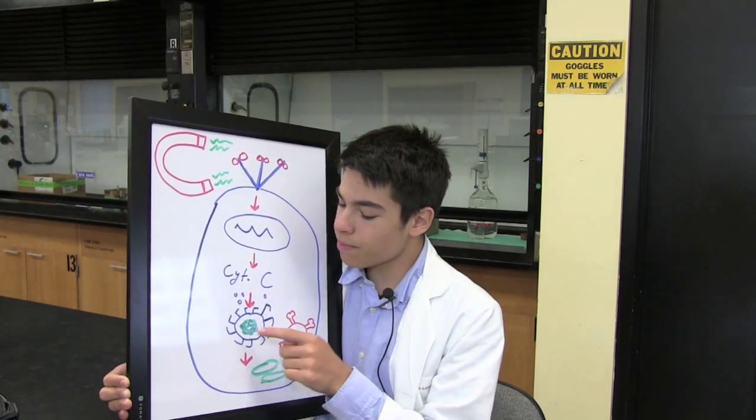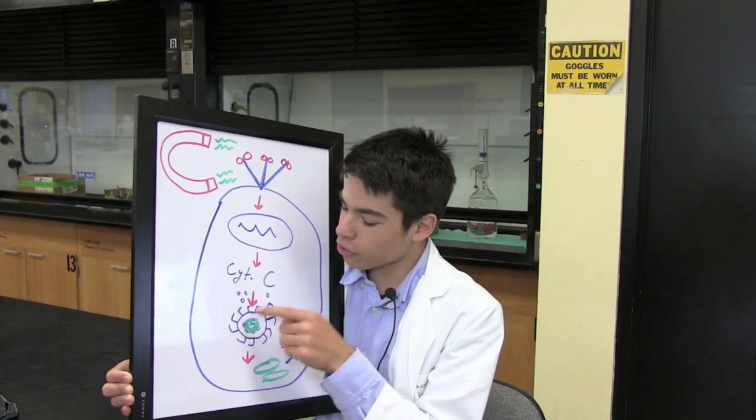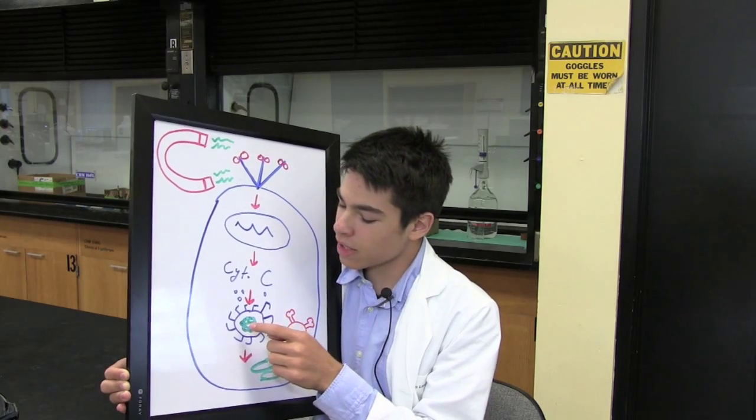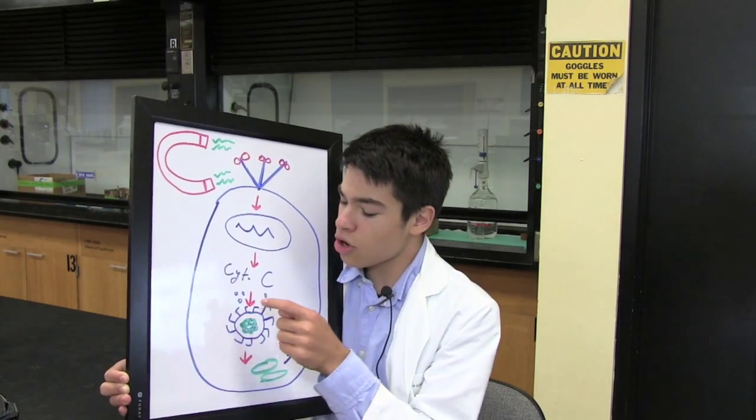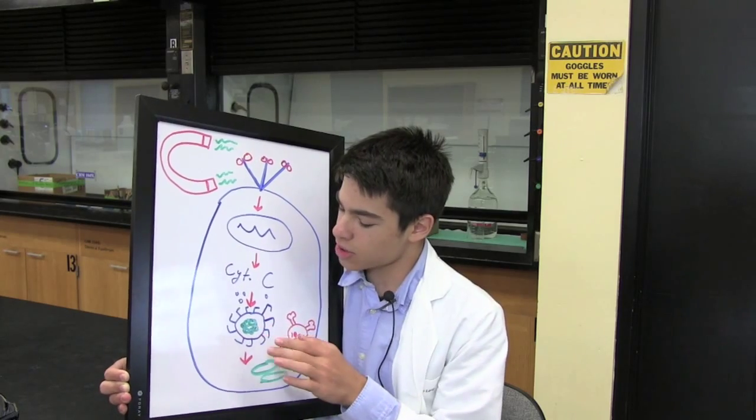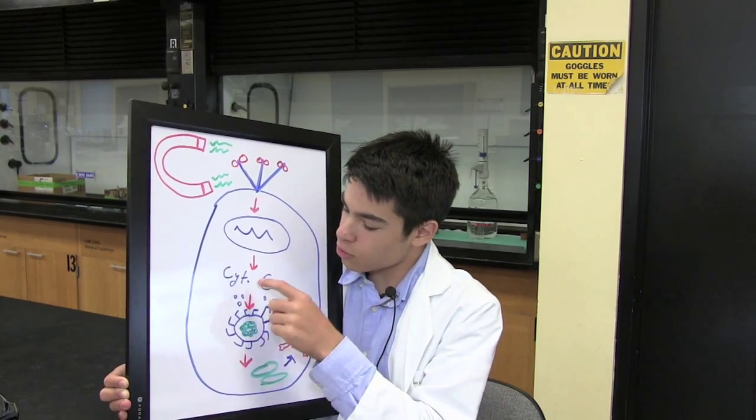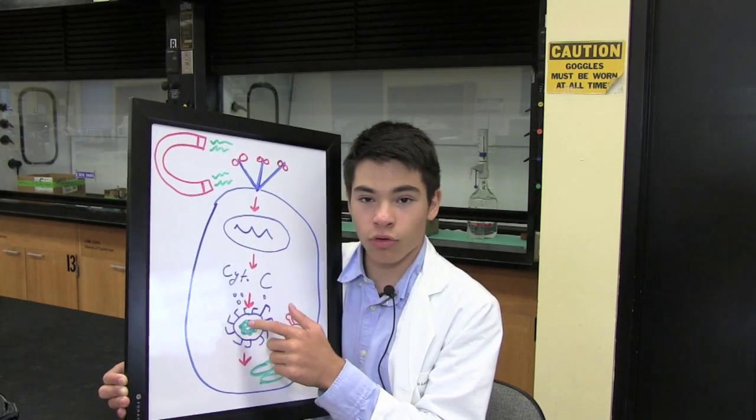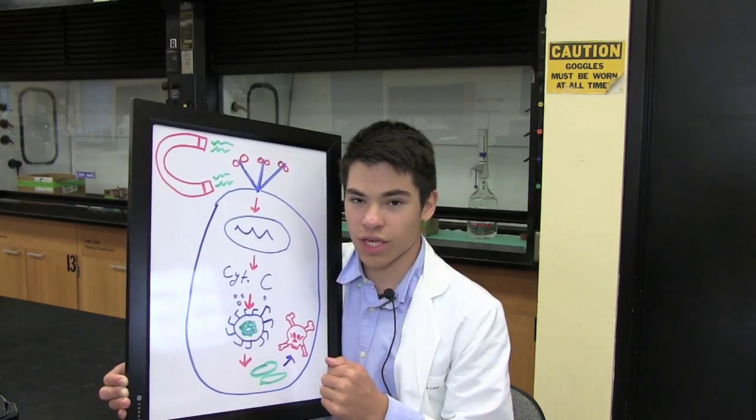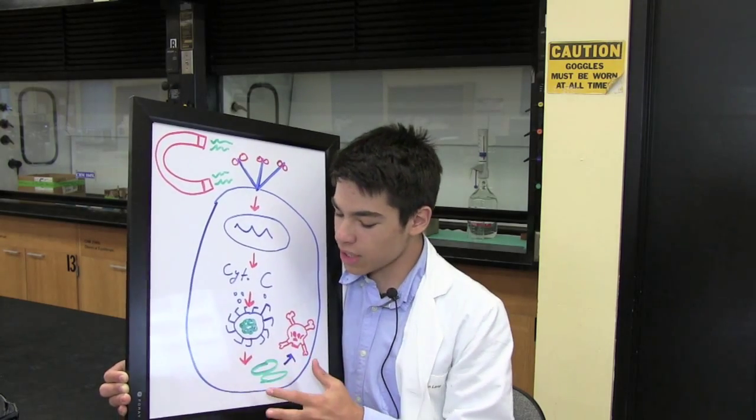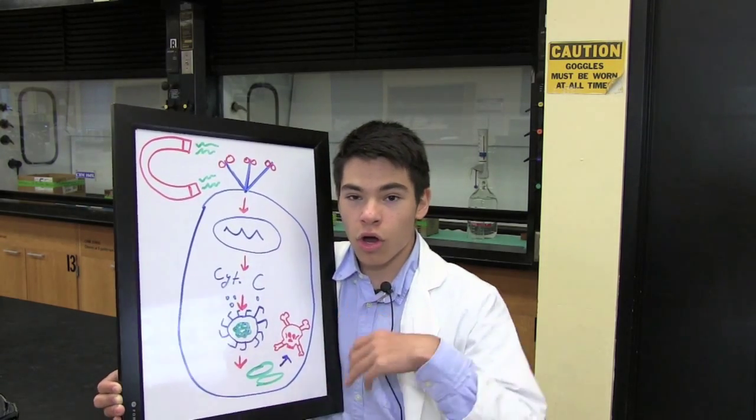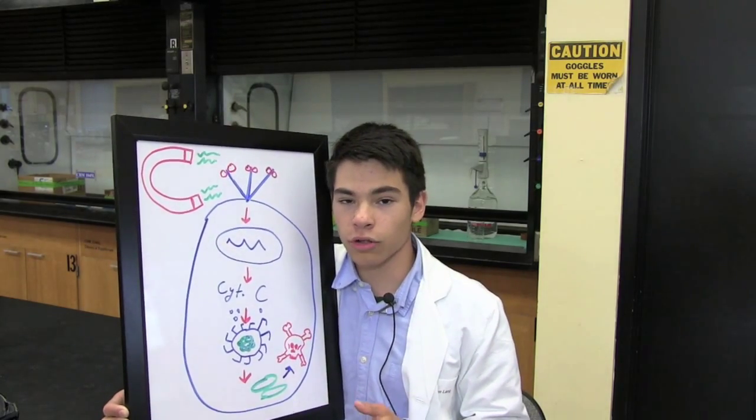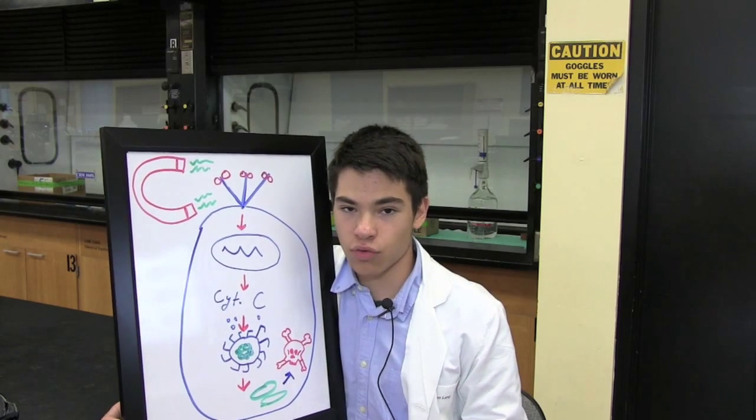Now, cytochrome C then bonds to this little weird-looking thing here, this pinwheel-looking thing called an apoptosome. Specifically, it bonds to these little prongs here called APAF-1 prongs. Once you bond the cytochrome C to it, it will change conformation to release these little green chemicals here. Once released, these green chemicals open up nice and long and change conformation to a chemical called active caspase 3.